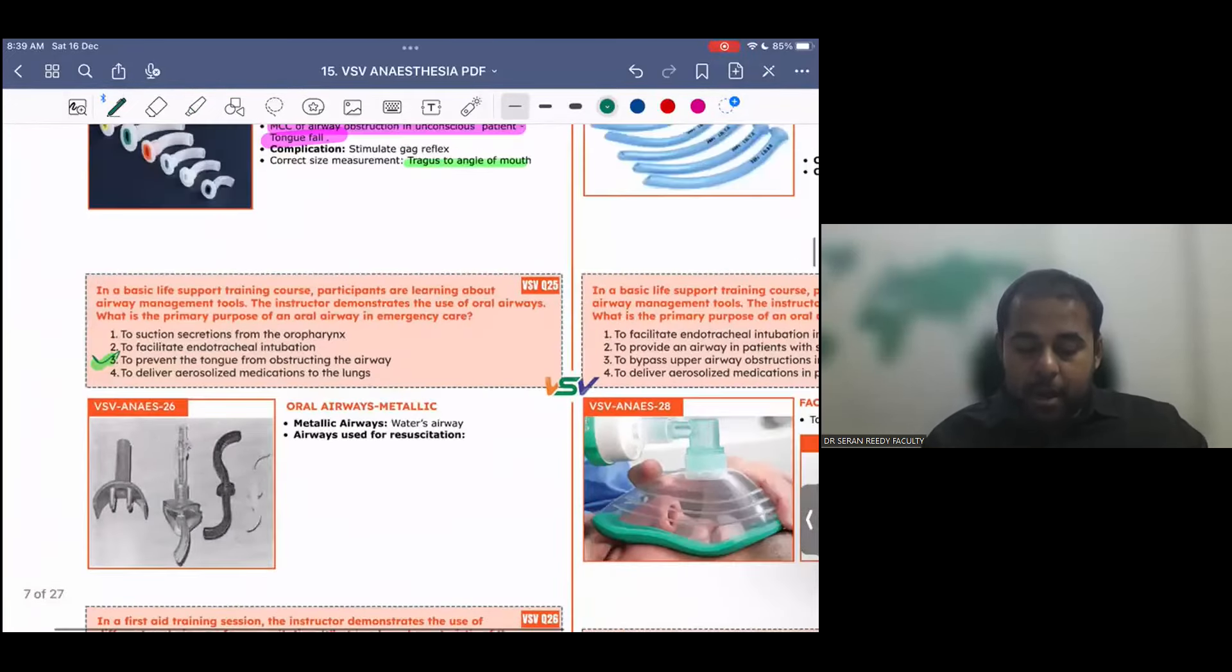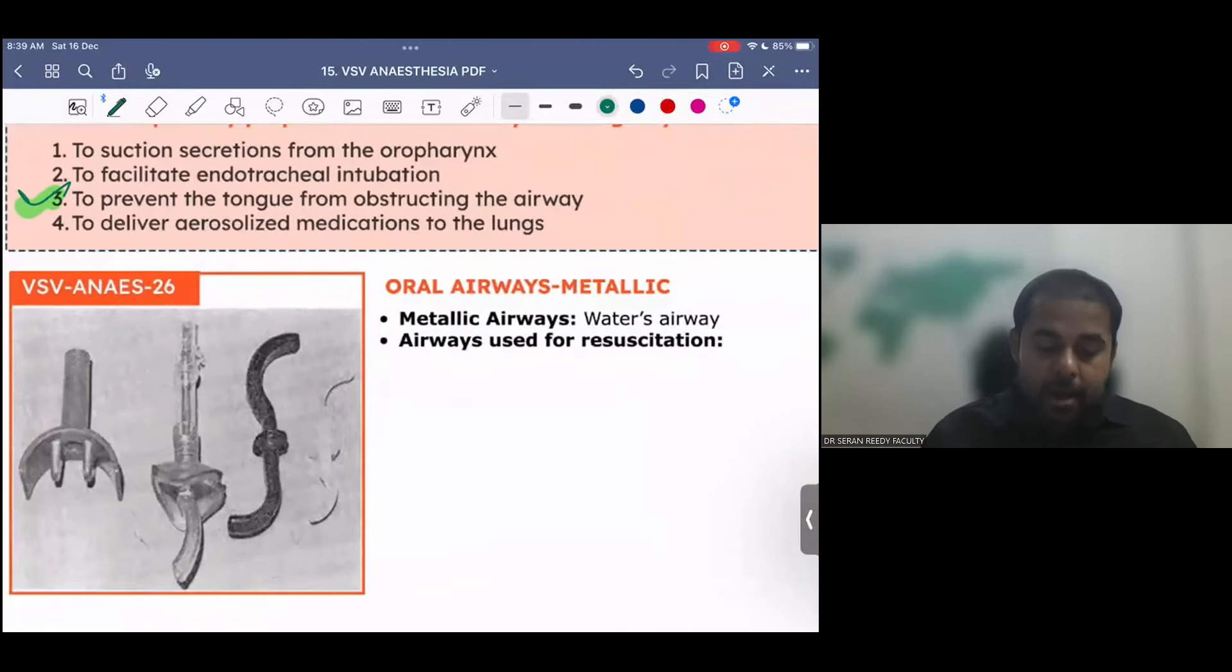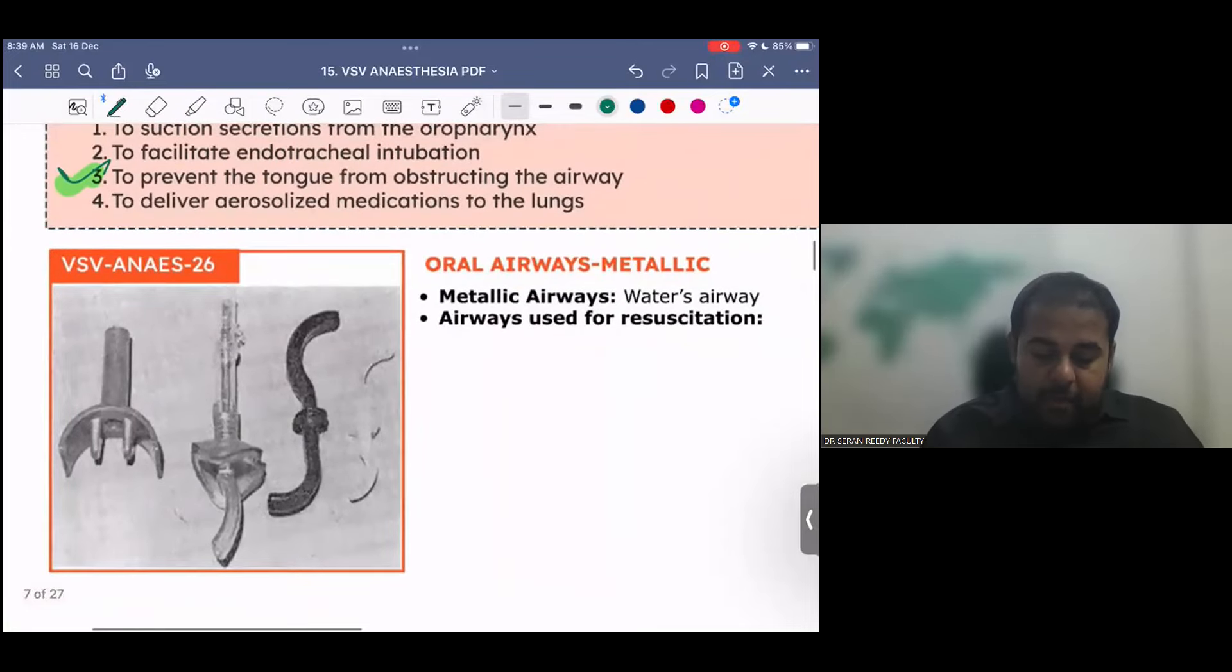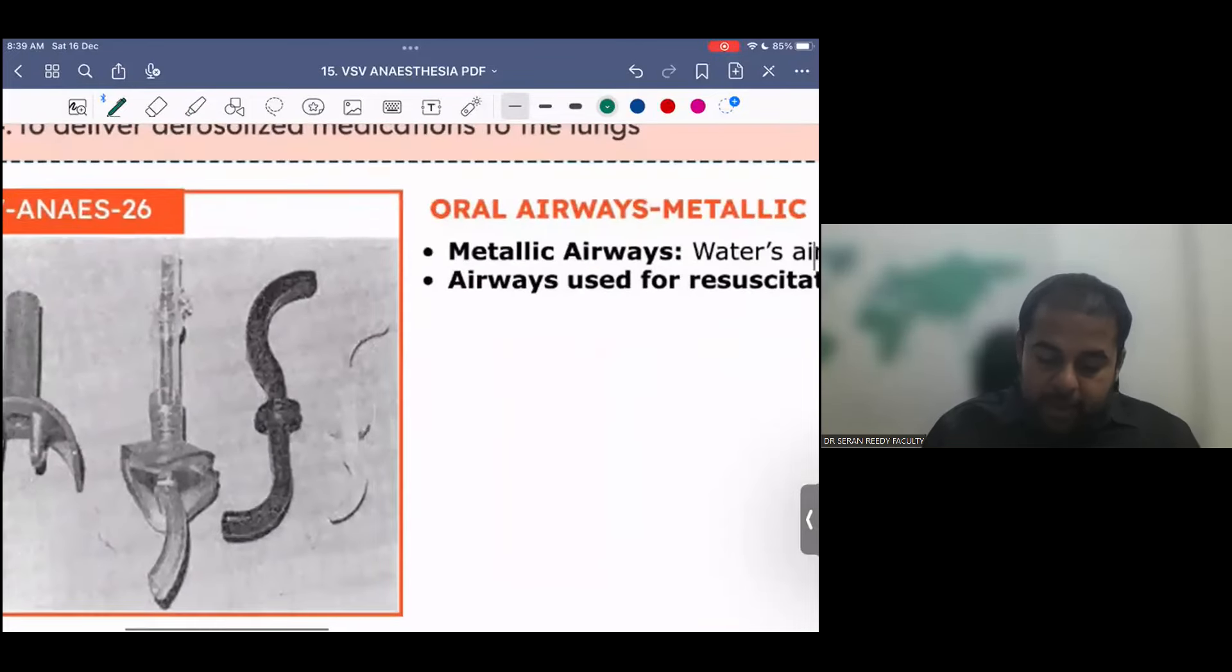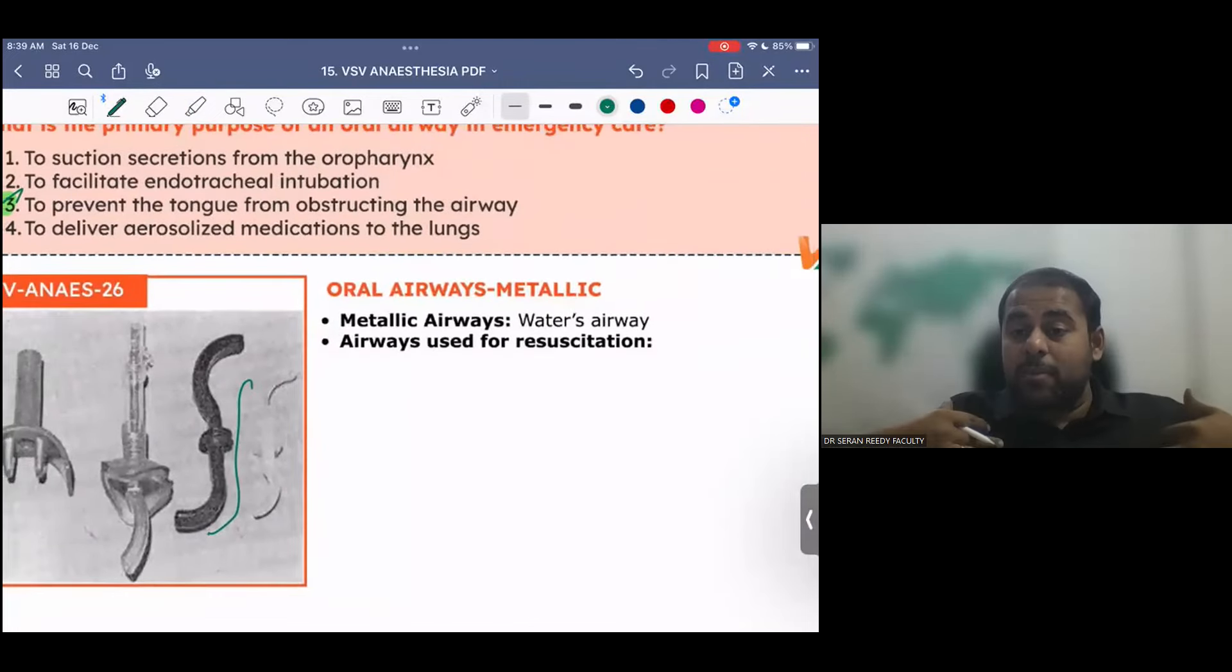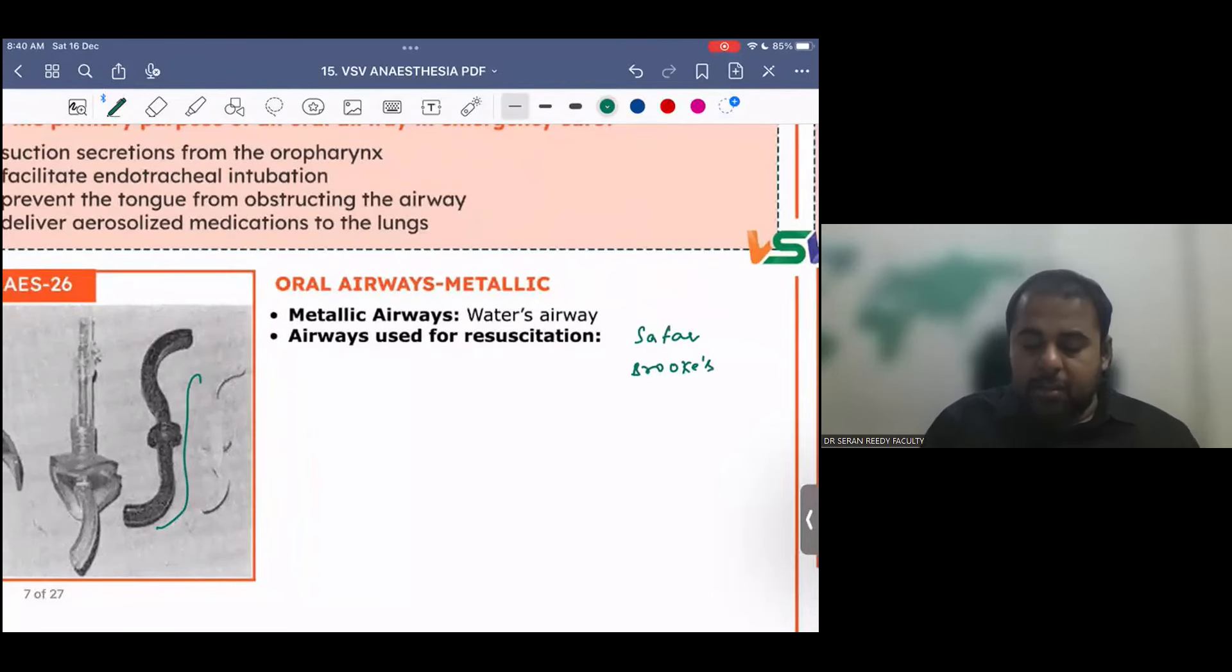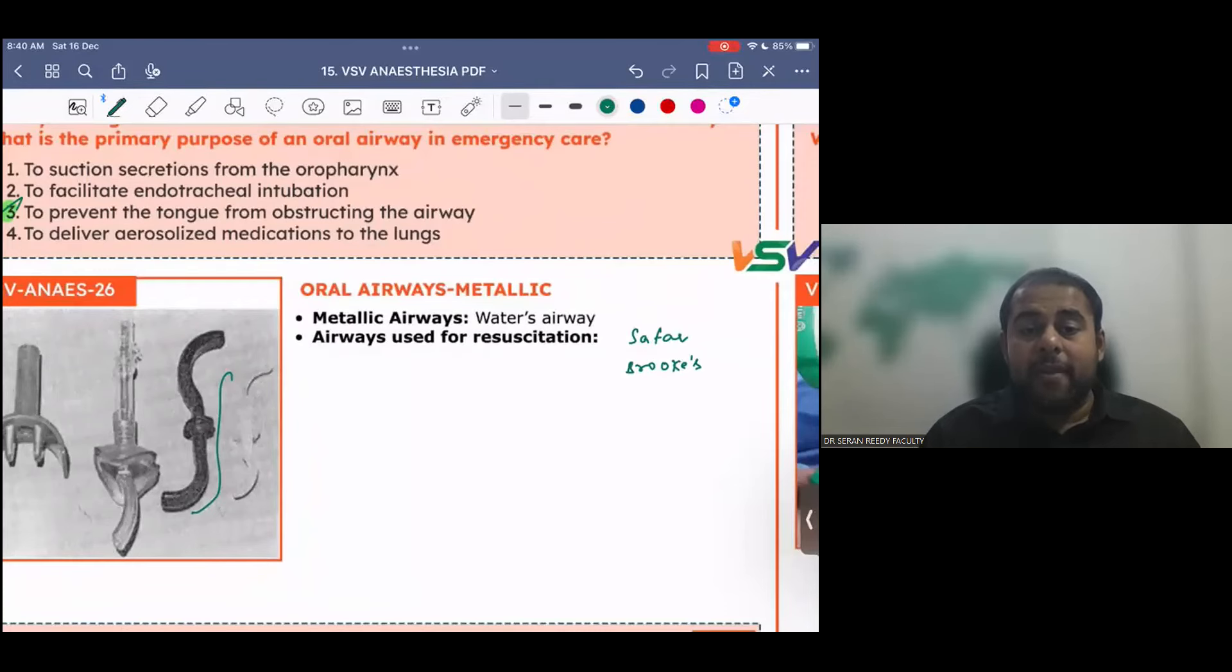Oral airways, metallic. This is a normal plastic thing, and PVC. We have the oral airways. It is metallic airways. There are like three, Watern's airway, and these airways. Can you see this, with the different shapes? And these are called airways used for resuscitation, where one goes inside the patient's mouth, and another will be outside. Like in olden days, for mouth-to-mouth ventilation, they are used. They are Suffer and Brooke. This special design of this airway, this Suffer airway, this special design itself, is an advantage for mouth-to-mouth ventilation used for resuscitation.